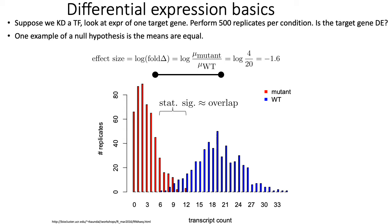On the other hand, statistical significance can be visualized as the overlap between the blue and the red curve. Intuitively, the less overlap there is between the red and the blue curve, the more statistical significance you get from that test. Conversely, if there's more overlap between the curves, the statistical significance is less — so the p-value would be larger.